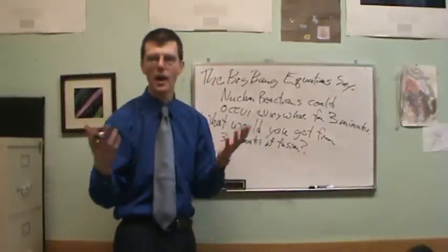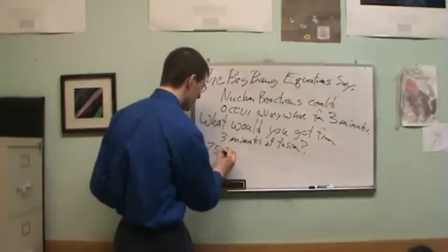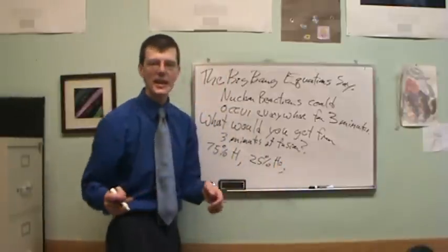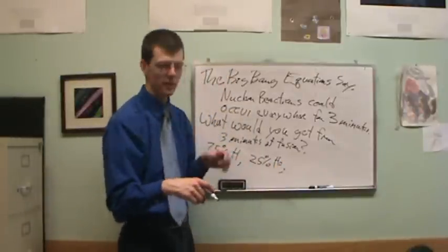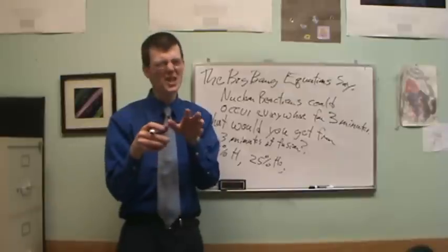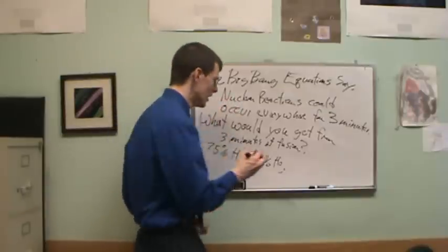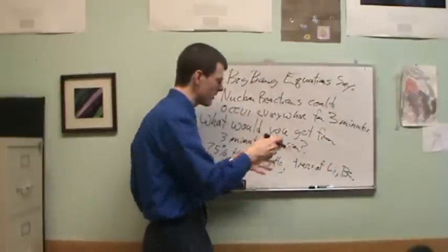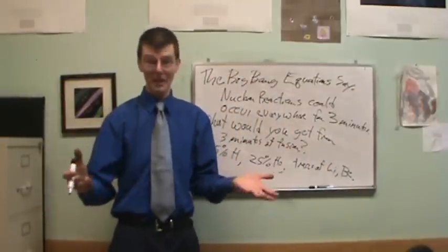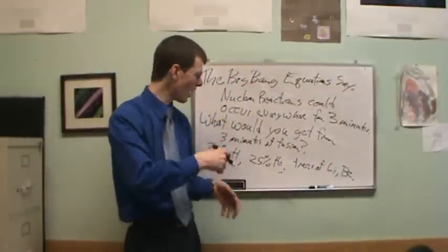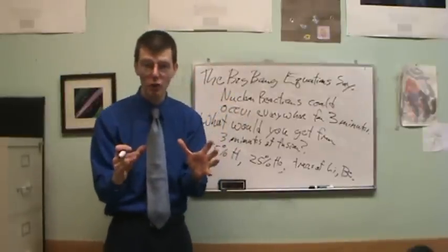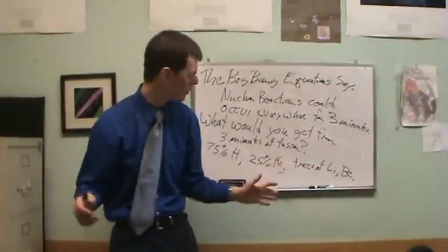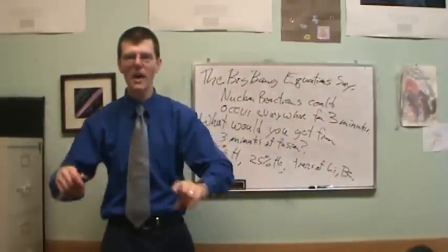Here's what you would get. Basically, 75% of the universe would be hydrogen. 25% of the universe would be helium. You would then get a tiny trace of deuterium, a heavy hydrogen, a little bit of lithium, a little bit of beryllium, just these teeny tiny little traces. Why? Because three minutes isn't that long. If the Big Bang equations are right, you're going to fill the universe with 75% hydrogen, 25% helium. You'll have time to get these teeny little traces of lithium and beryllium and nothing else.